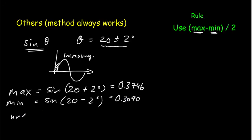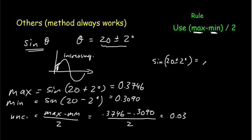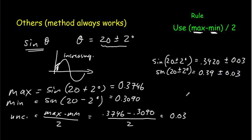Your uncertainty equals (max minus min) divided by 2, which is (0.3746 minus 0.3090) divided by 2, and that comes out to 0.03 to one significant digit. So the sine of 20 plus or minus 2 degrees equals the sine of 20, which is 0.3420, plus or minus 0.03. Rounding to the second decimal place gives 0.34 plus or minus 0.03. Notice that if we had a cosine function, it would be decreasing at 20 degrees, so the maximum would occur at 18 degrees and the minimum at 22 degrees.